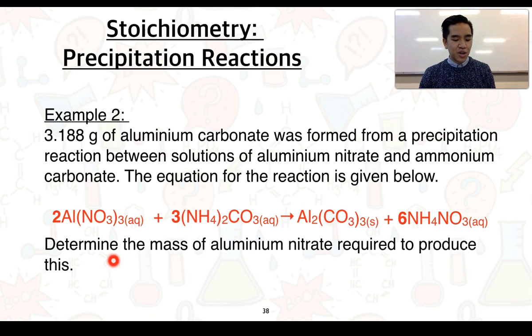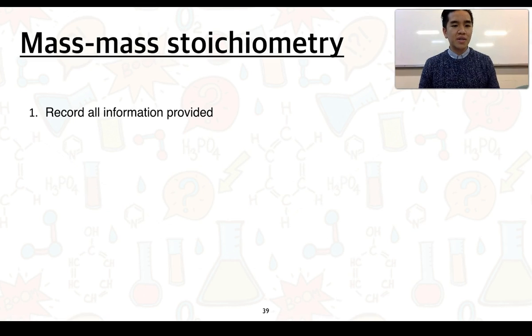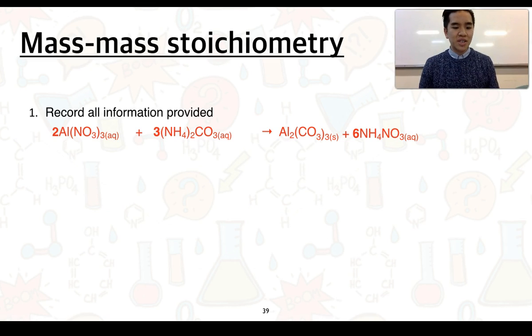The question asks, determine the mass of aluminium nitrate that is required to produce this. The aluminium carbonate is our product, so we need to work out how much of our aluminium nitrate we will need in solution. Let's firstly record all the information that's provided. From our balanced equation here, we are trying to work out the mass of our aluminium nitrate, but we were given the mass of our precipitate at 3.788 grams.